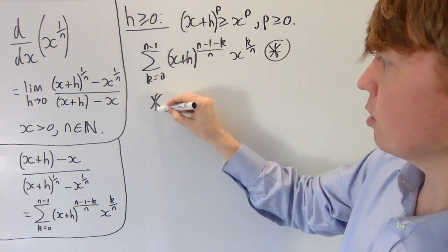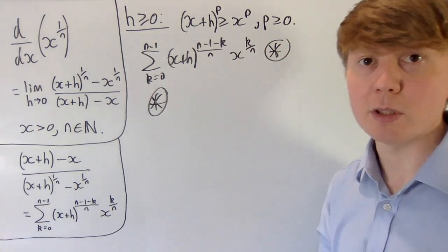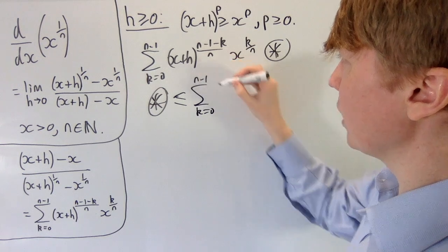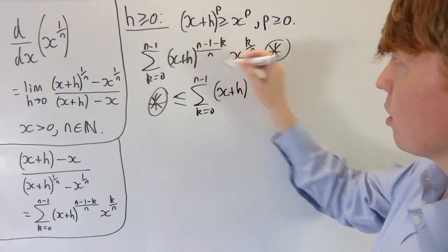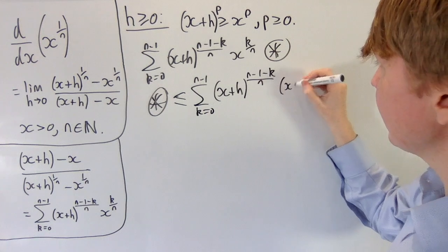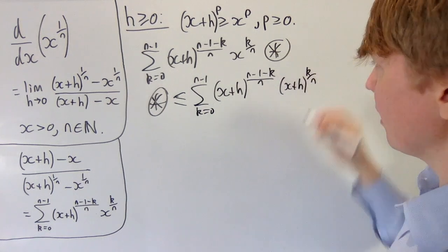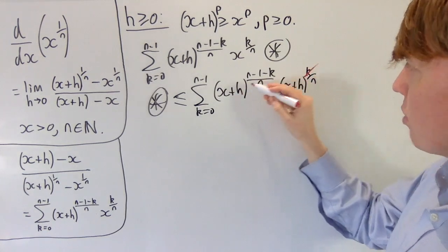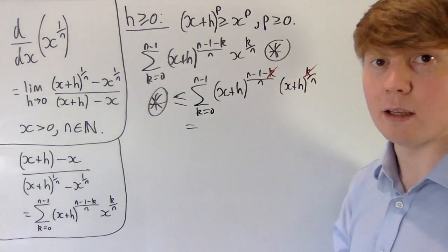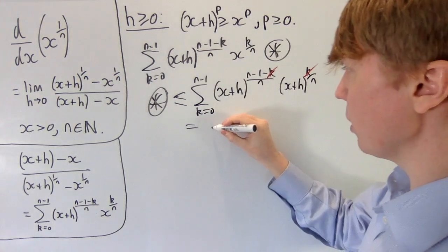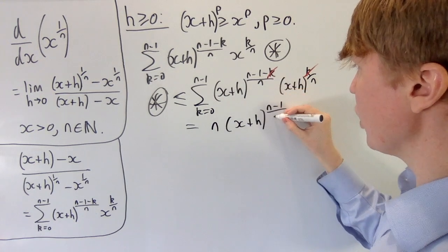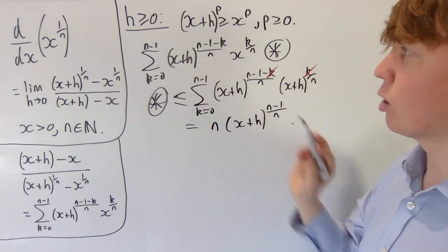For an upper bound, we know that each of the x to the p terms are less than or equal to our x plus h to the p terms. So this is less than or equal to the sum from k equals 0 to n minus 1 of x plus h to the n minus 1 minus k over n, but then we replace our x terms by the slightly larger x plus h to the k over n. Now we've got x plus h to the k over n and x plus h to the n minus 1 minus k over n, so the k-dependent parts cancel, and you're left with no dependence on k in your sum. So all you're left with is n copies of x plus h to the power of n minus 1 over n. This is our first upper bound.